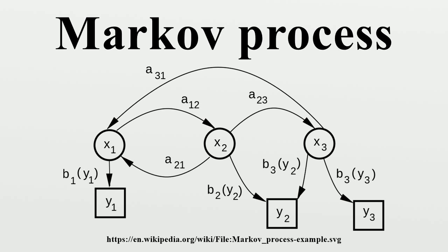A Markov process is a stochastic model that has the Markov property. It can be used to model a random system that changes states according to a transition rule that only depends on the current state. This article describes the Markov process in a very general sense, which is a concept that is usually specified further. Particularly, the system's state space and time parameter index needs to be specified. The following table gives an overview of the different instances of Markov processes for different levels of state space generality and for discrete time versus continuous time.